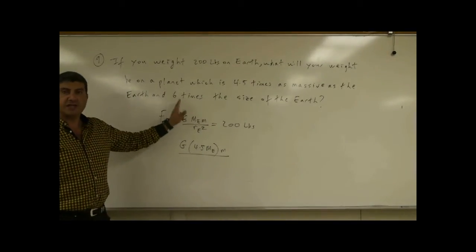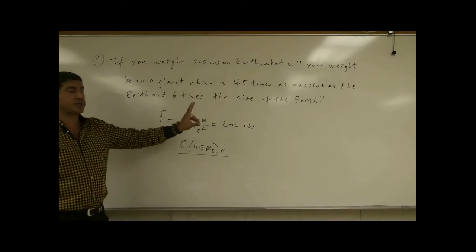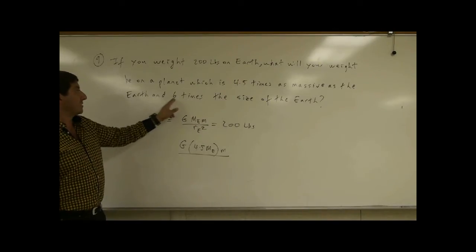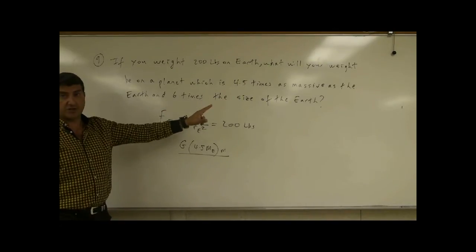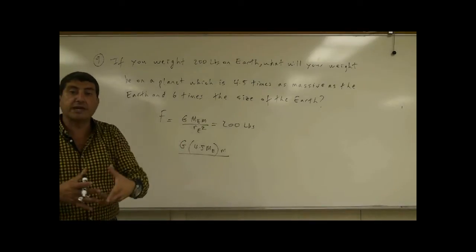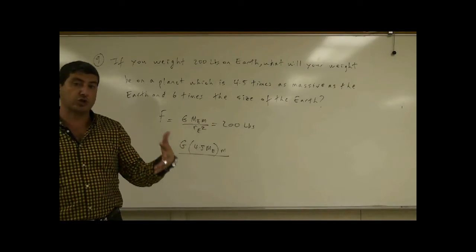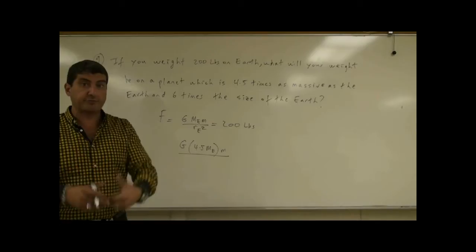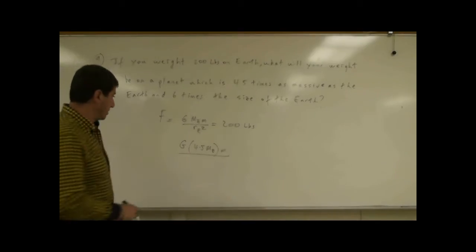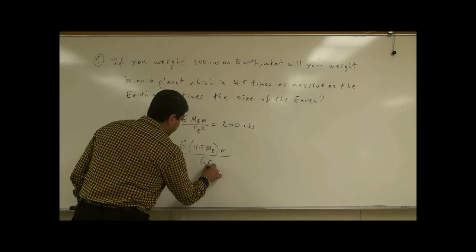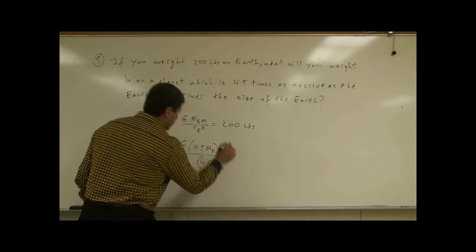It says six times the size of the Earth. It doesn't literally say the radius of the planet is six times bigger. But when it says that the planet is six times the size of the Earth, that's what that means. The radius of the planet is six times larger and the diameter of the planet is six times larger. So this is going to be six radius of Earth, but you have to square it.